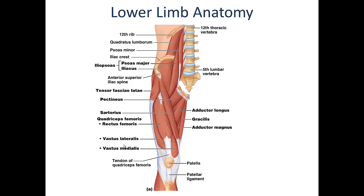Starting with the muscles on the anterior portion crossing the hip joint — the hip flexors — most superiorly we have the iliopsoas muscle. This muscle is actually two distinct muscles sharing a common insertion site on the femur. The iliacus originates on the anterior aspects of the ilium, and as such only crosses the hip joint, facilitating hip flexion only. Whereas the psoas major, the other component of the iliopsoas, is much longer and continues upward into the lumbar region of the lower spine. Because of this, not only does it facilitate flexion at the hip, but it also produces flexion of the lumbar region as well.